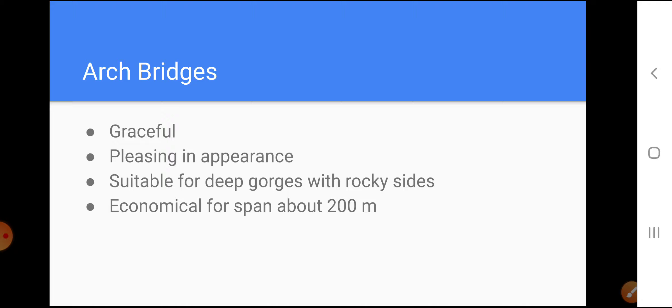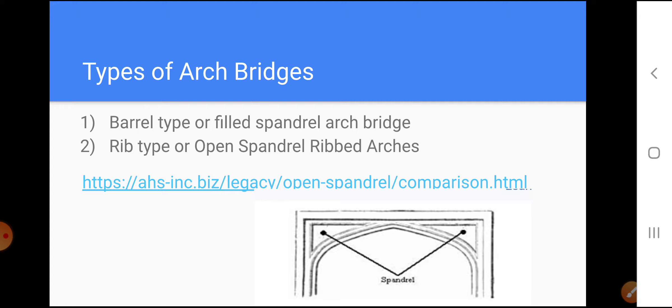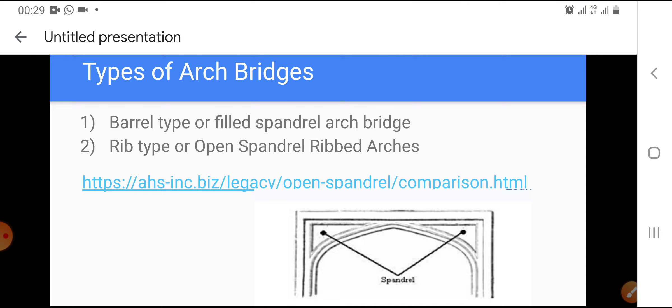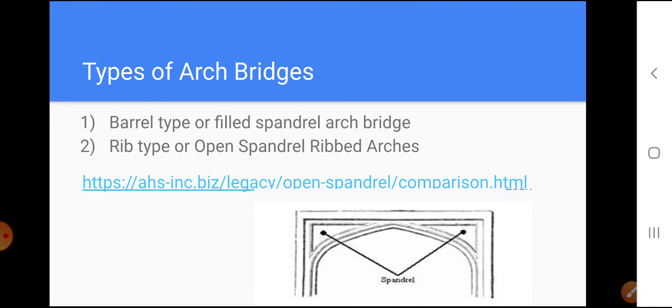There are two types of arch bridges. The first is barrel type or filled spandril arches, and the second is rib type or open spandril ribbed arches.